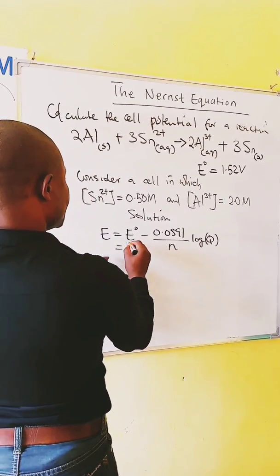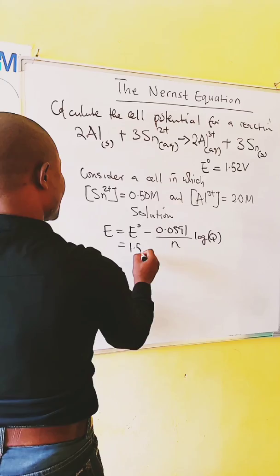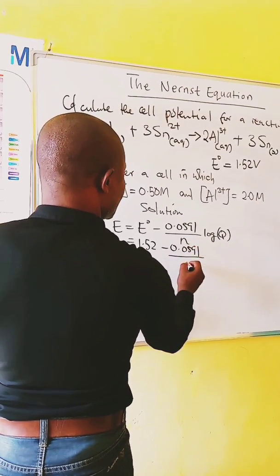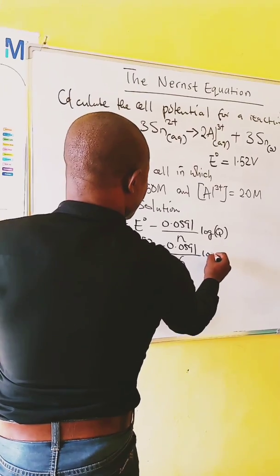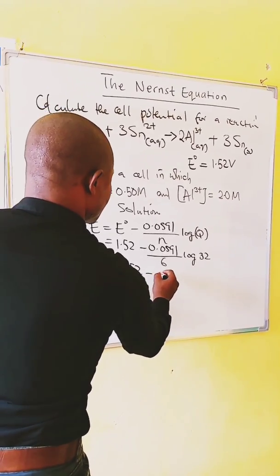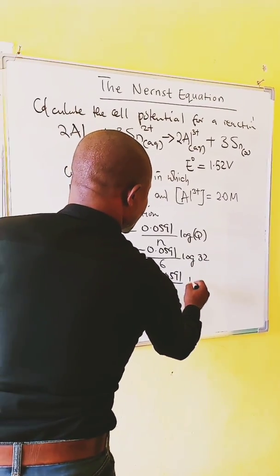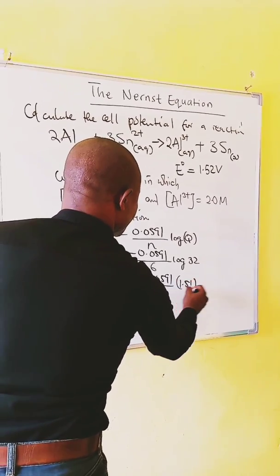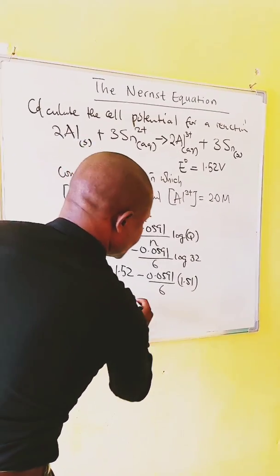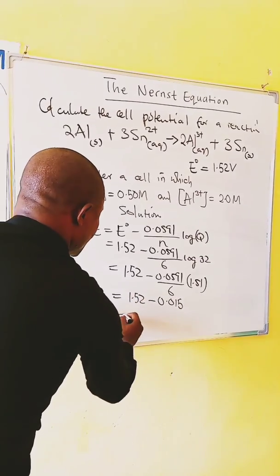Which is equal to the E standard which is 1.52 minus 0.0591 over n, n is 6, log 32, which is equal to 1.52 minus 0.0591 over 6 log 32. Then we multiply and divide: 1.52 minus 0.015 which is equal to 1.51 volts.